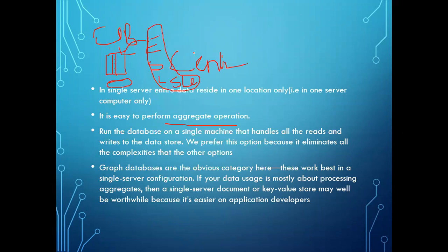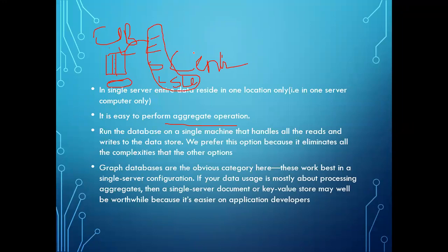Graph databases work best in single server configurations. If your data usage is mostly about processing aggregates, a single server document or key-value database may be worthwhile because it is easier on applications. The key-value database is suitable for single server systems, whereas graph databases — which have more number of relations and entities — are suitable for the distributed model.